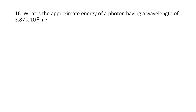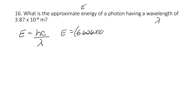What is the approximate energy of a photon having a wavelength of 3.87 × 10⁻⁸ meters? This time we use the equation E = hc/λ — the only one with energy and wavelength, not frequency. So we have 6.626 × 10⁻³⁴. Remember, on the test you're going to have to show your calculations for the light equations. I'll even put 'show your work' on the question.